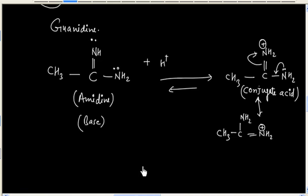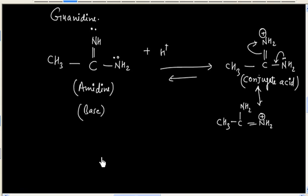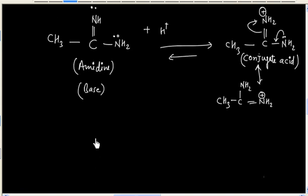In the case of amidine also, the doubly bonded nitrogen gets protonated. The general idea is: whenever we have both a singly bonded nitrogen and a doubly bonded nitrogen, the doubly bonded nitrogen will always get protonated.